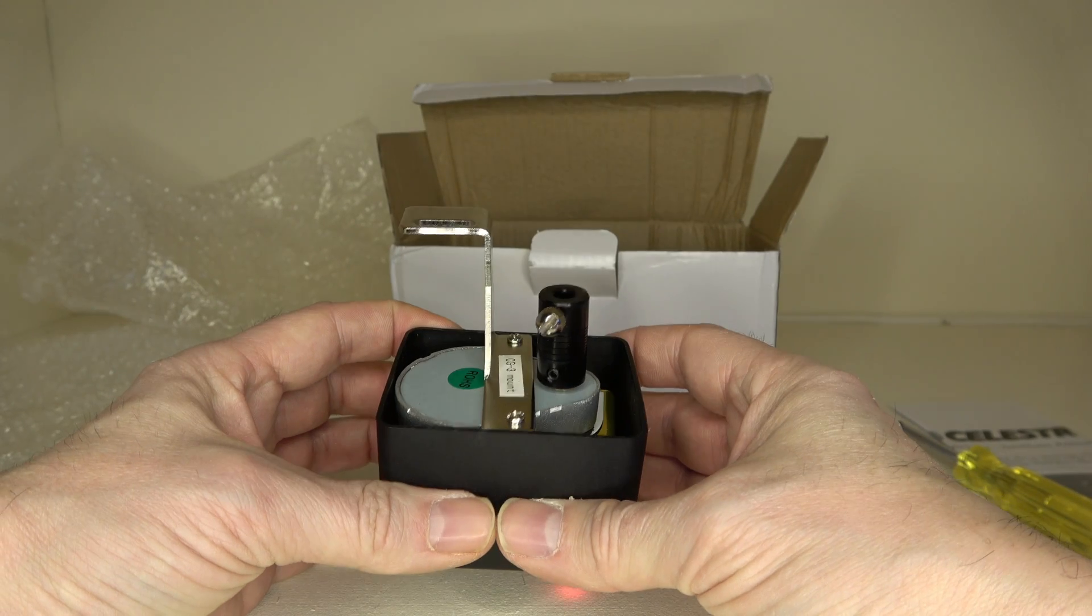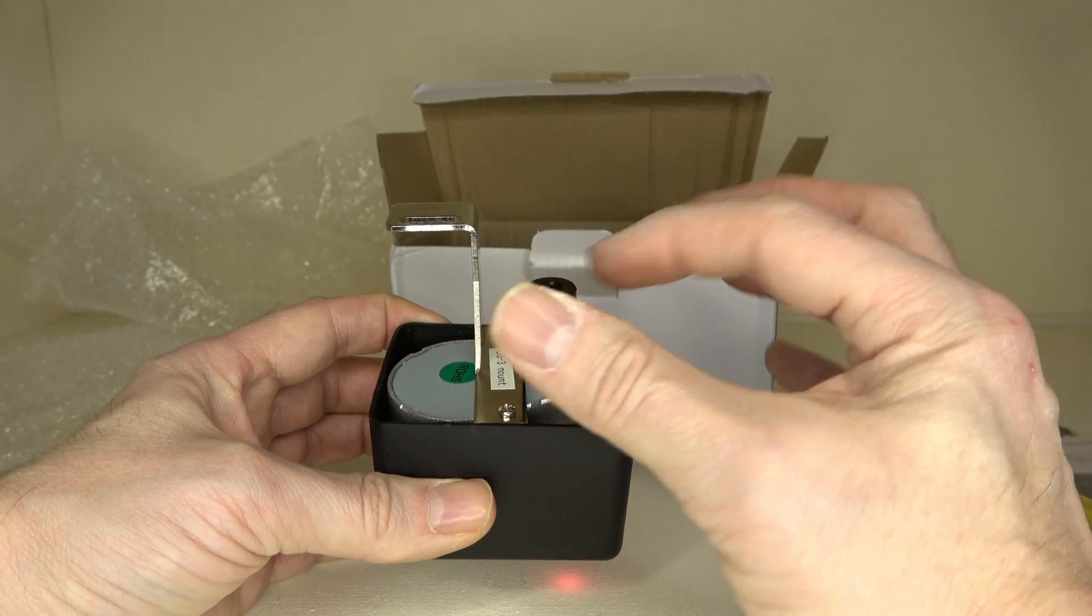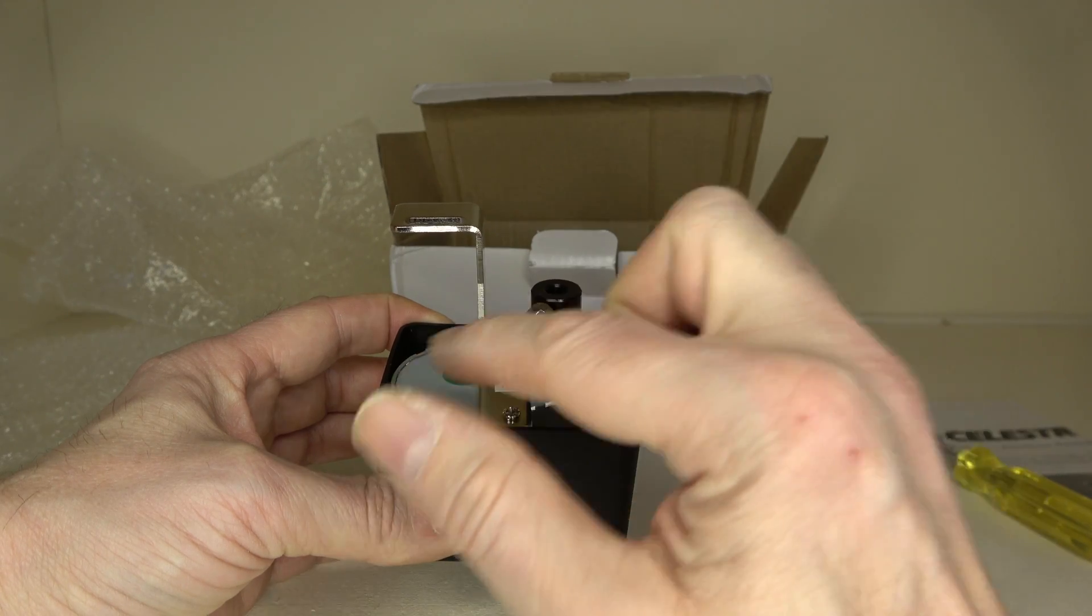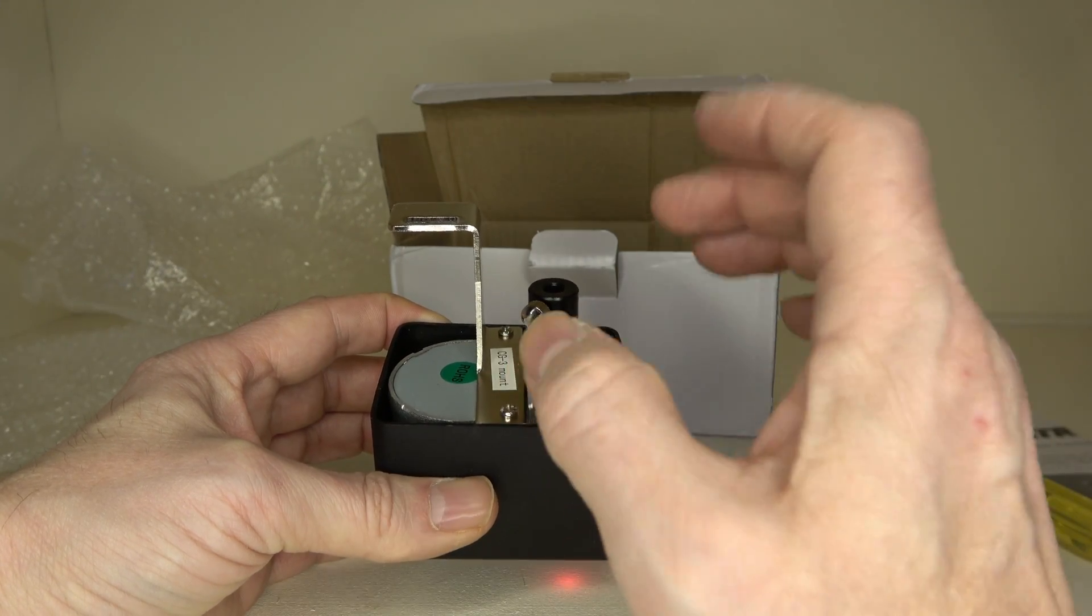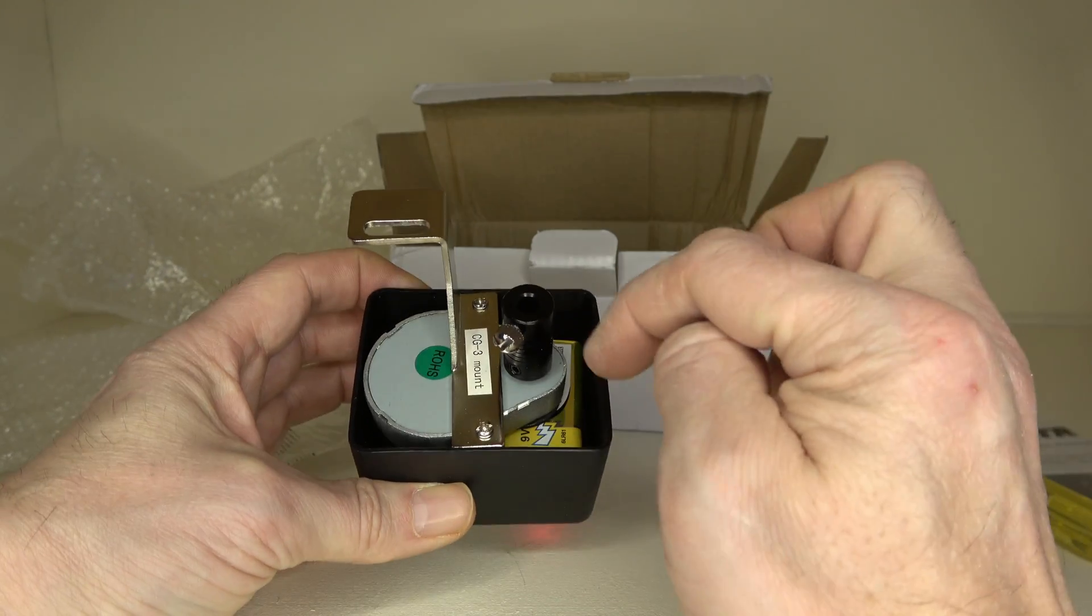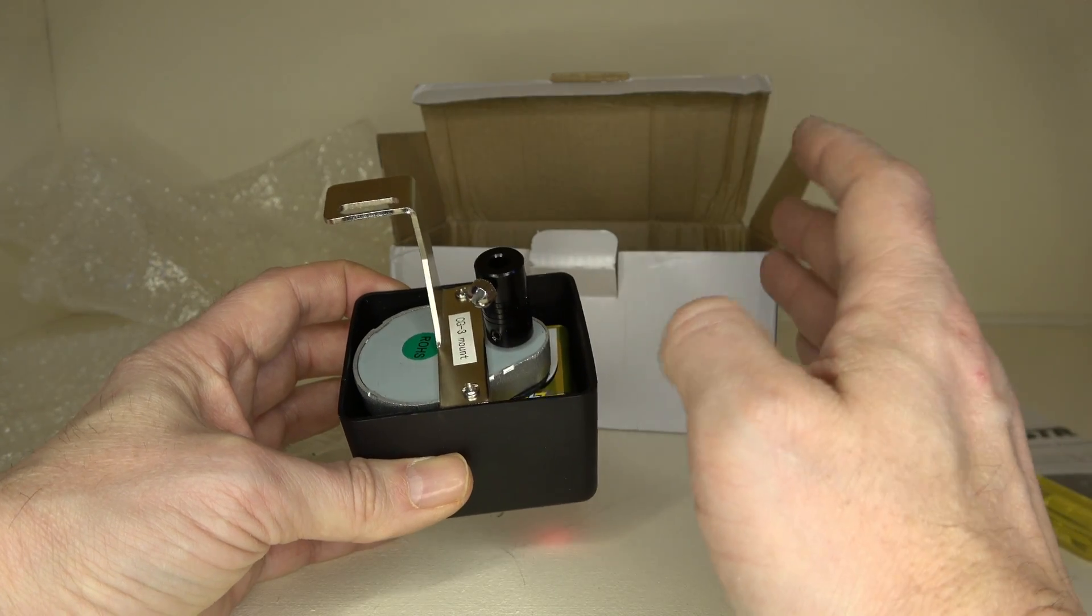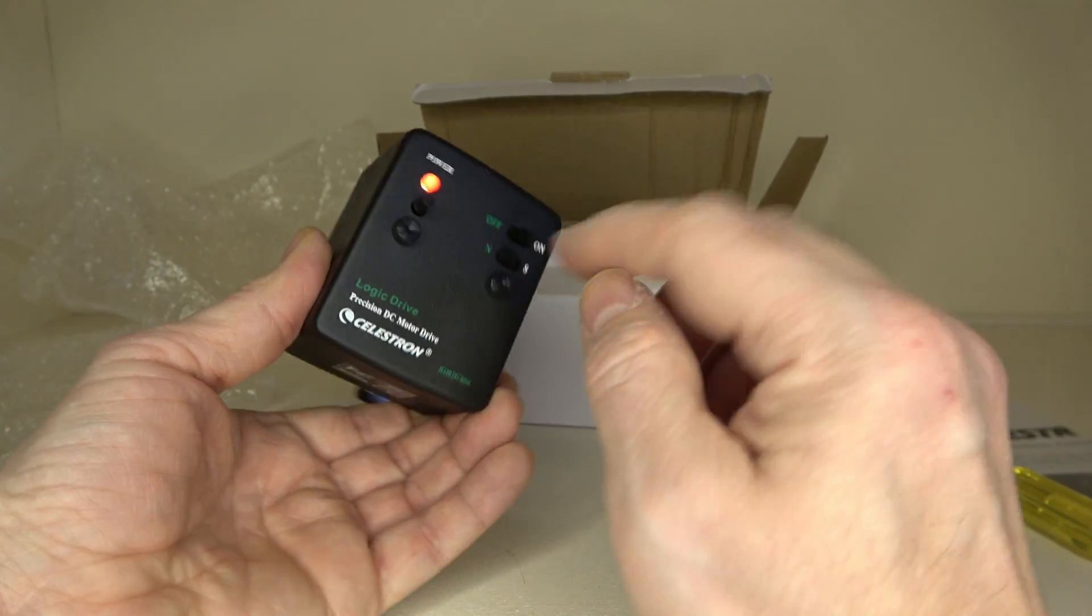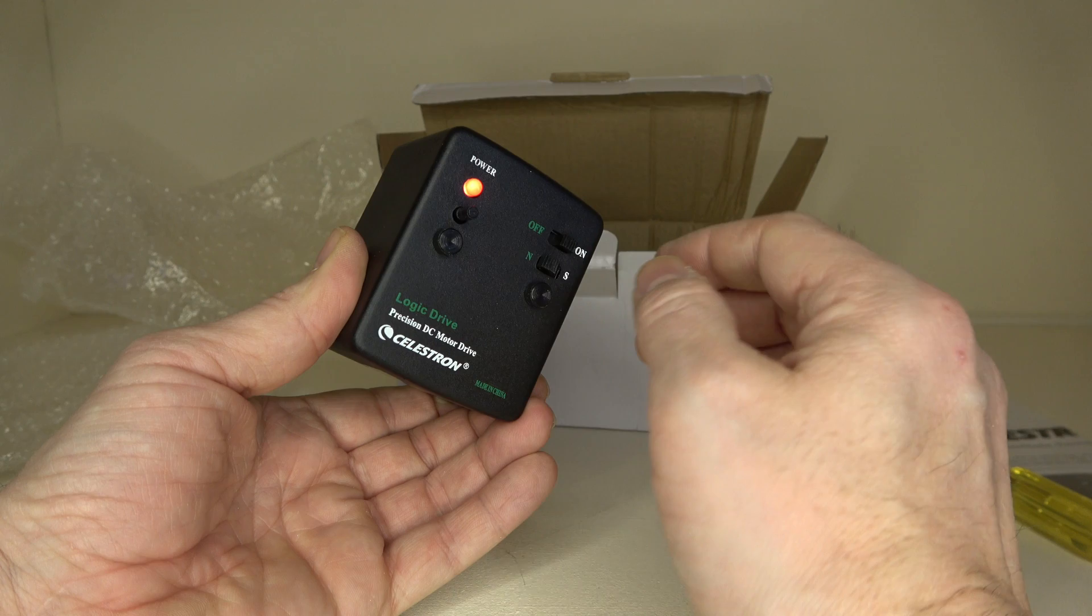And even on the fastest speed you're getting very little movement on that motor there. It's very well geared to give power and good battery life. You get around about 40 hours battery life with one of these little batteries. So you can rest assured you can use it for a long time before you need to undo these screws and change the battery again.